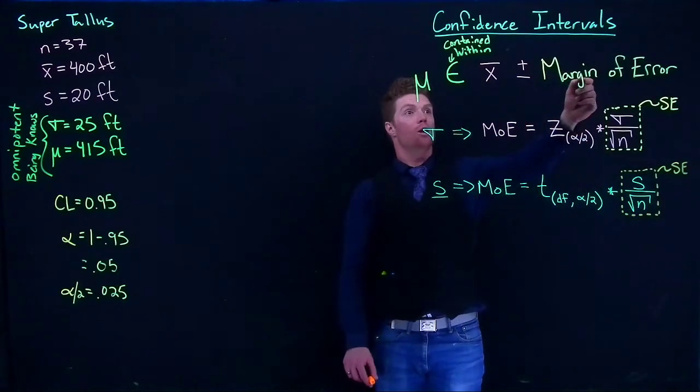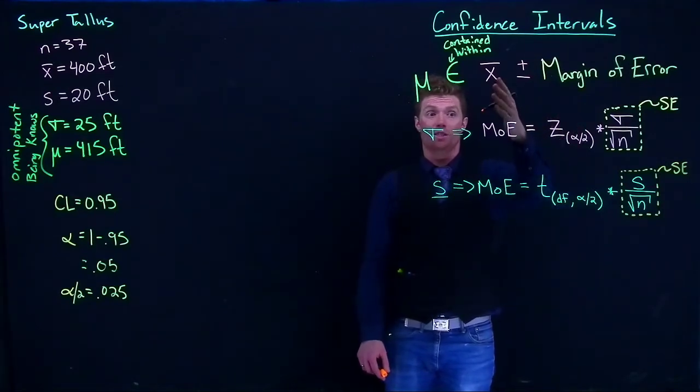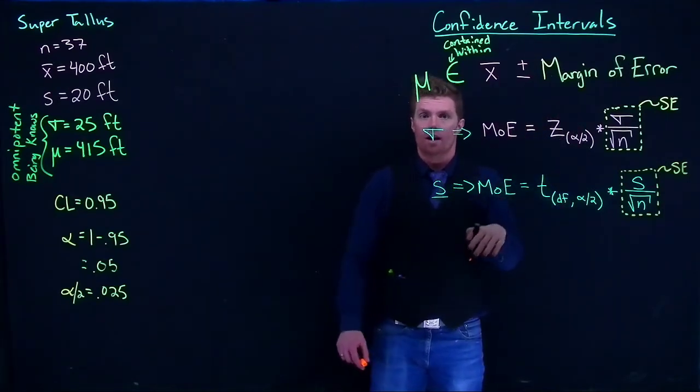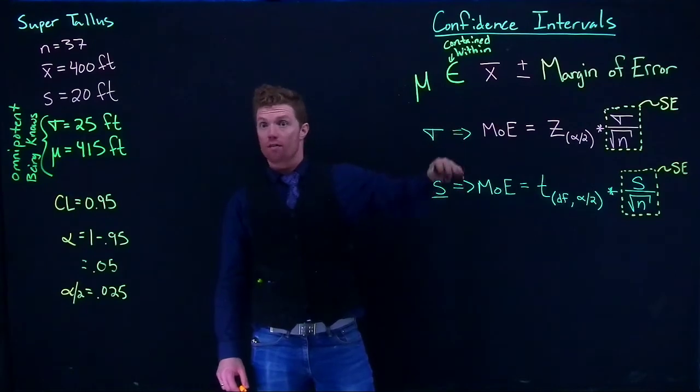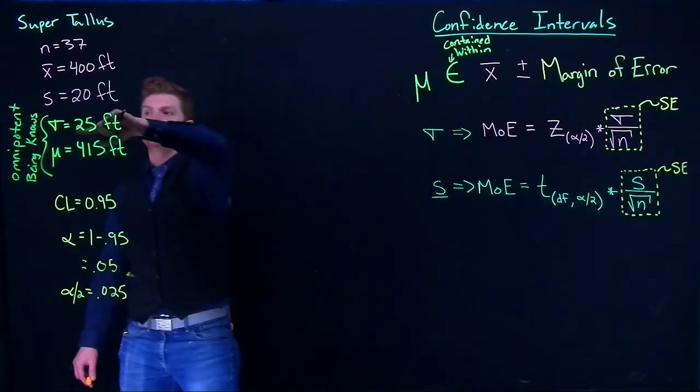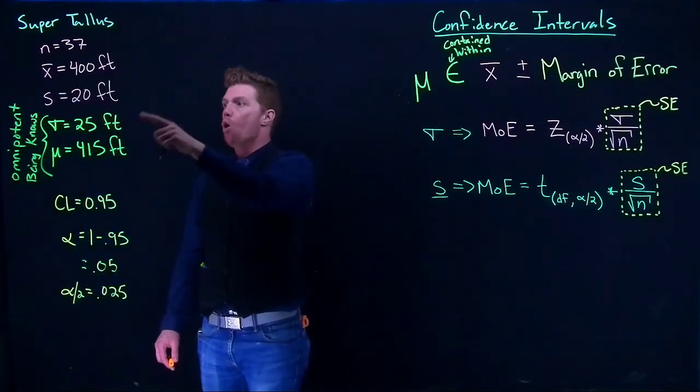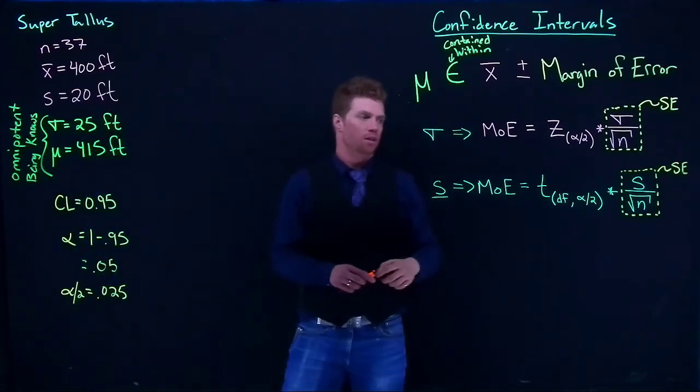So we've got a new way to calculate our margin of error. But besides that, the equation is the same. It's still our point estimate plus or minus the margin of error. And we just have to pick which method we're going to use based upon which standard deviation do we have: the population standard deviation or the sample standard deviation?